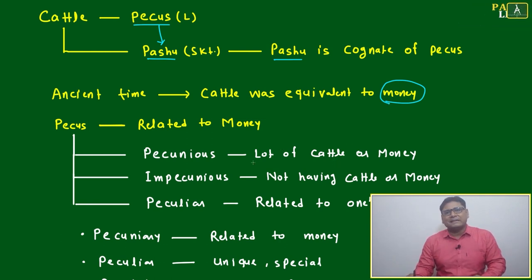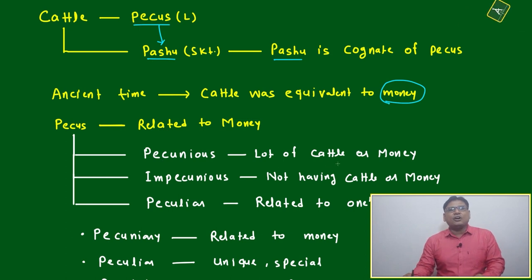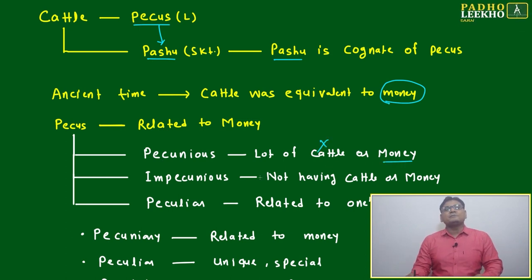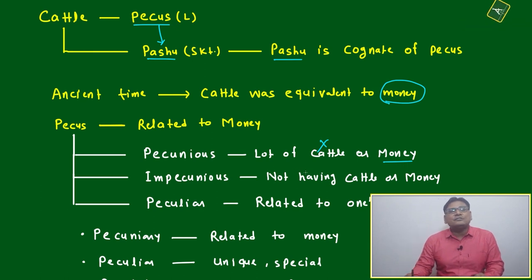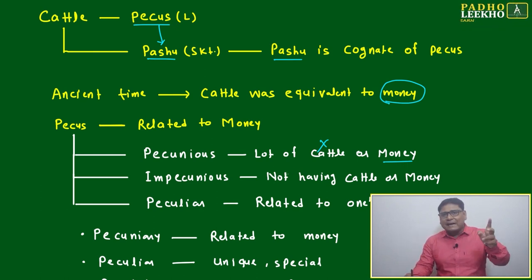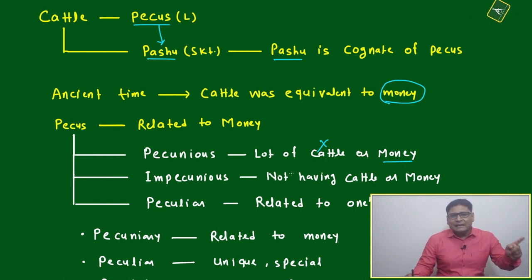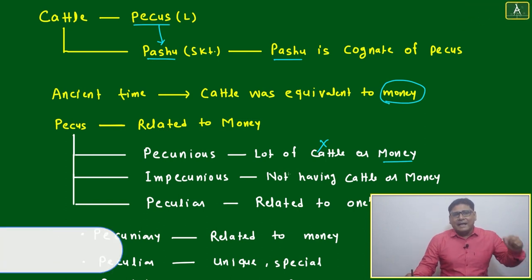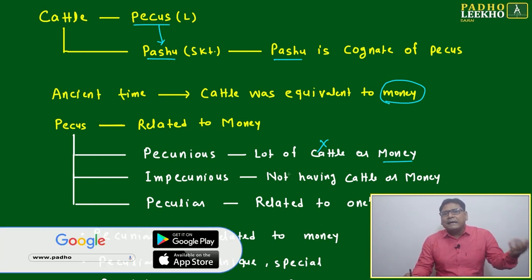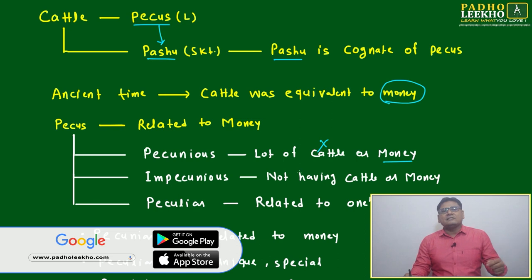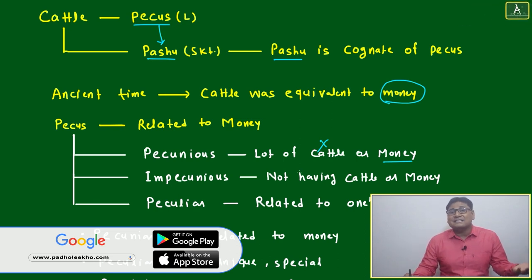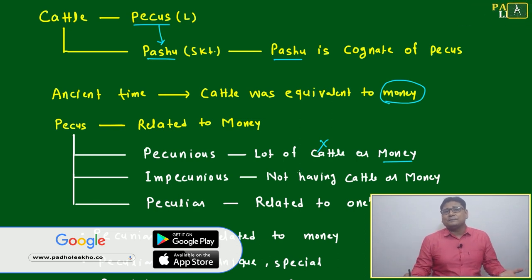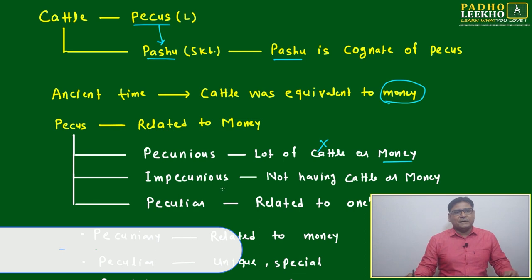Still, many words coming from the root Pekas are related to money. For example, 'pecunious' means having a lot of cattle or money. Now we no longer use it in terms of cattle — if someone is very rich, we say he is 'pecunious'. In ancient times, whoever had plenty of cattle was considered rich. Now it means having a lot of money.